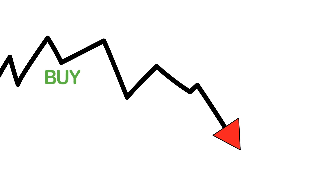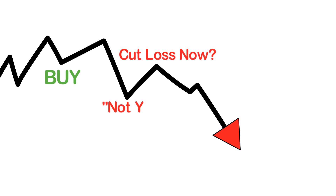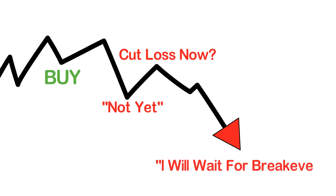Especially when confronted with losses, humans tend to be very emotional which can make it hard to cut a loss. Second-guessing a trading decision can cost you valuable time and money. A trading algorithm would immediately close a position as soon as the correct criteria are met.